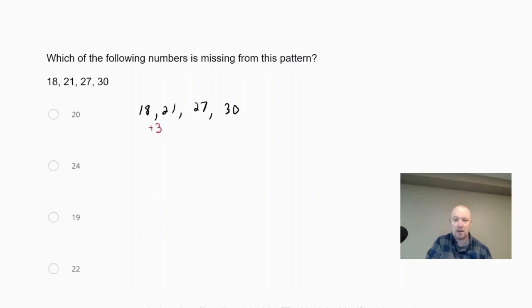And the difference between 27 and 30 means we're going up by 3 as a common difference. But if we look between the second and third terms, we're going up by 6. So that means that our missing term must be in between the 21 and the 27.